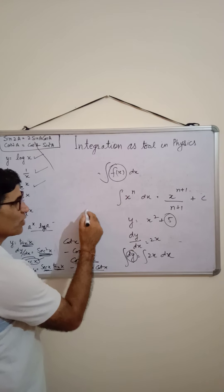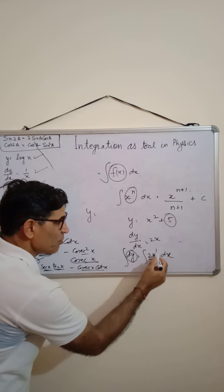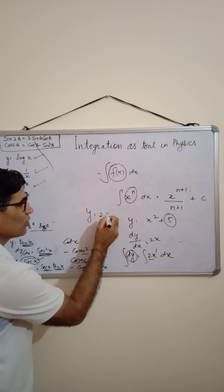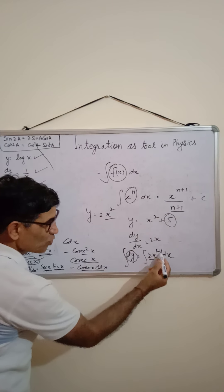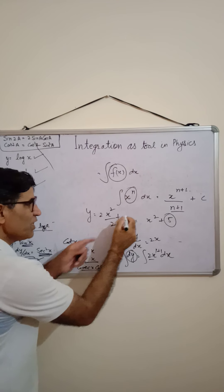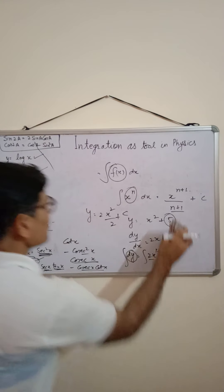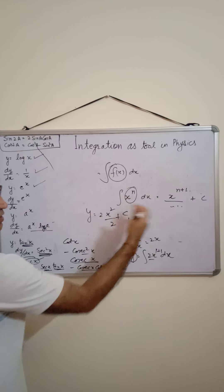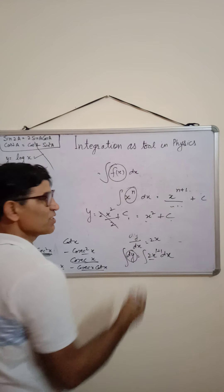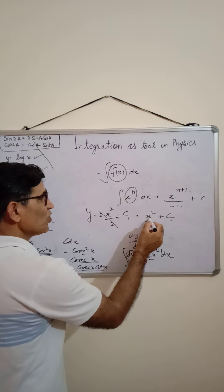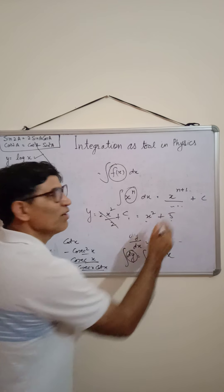Working out the example: dy = 2x dx. Integrating both sides, y = 2 · x^(1+1)/(1+1) + C = 2 · x²/2 + C = x² + C. This recovers our original function. To find C: put x = 0 and use the known y-value — in this case y = 5 when x = 0, so C = 5.